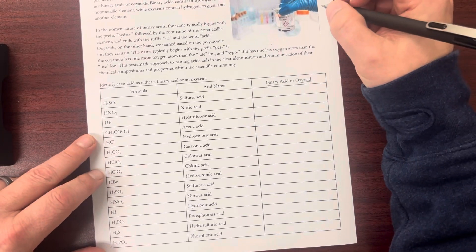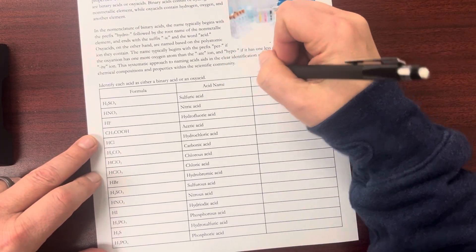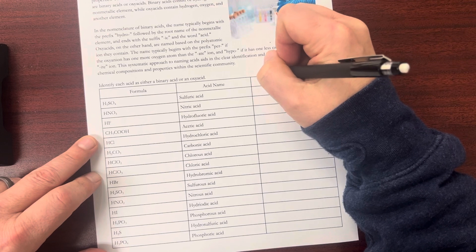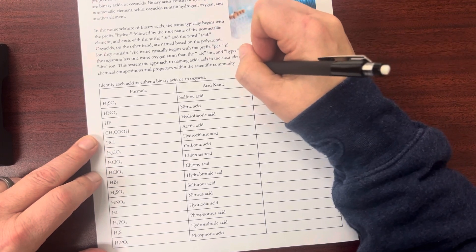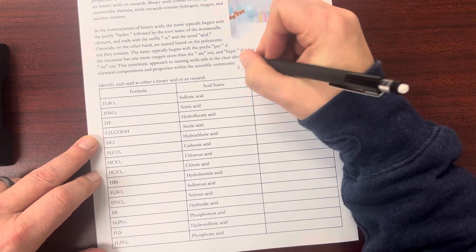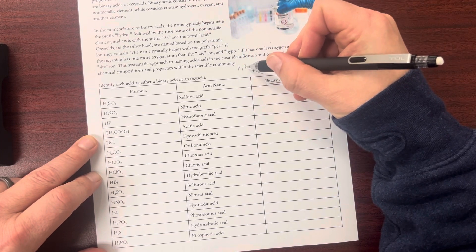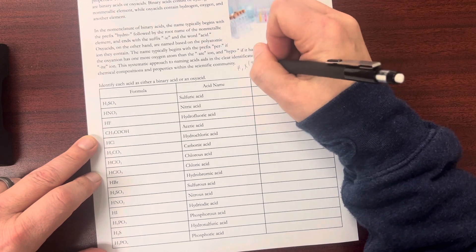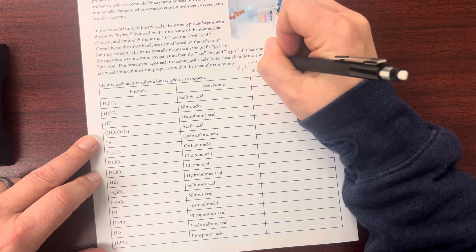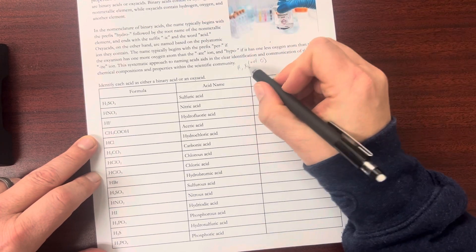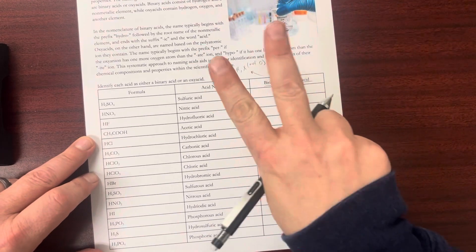Now with binary, what you're going to have is hydrogen and something else. I'm just going to put X, but something else with the hydrogen, but not oxygen. So hydrogen and one other thing. There's two elements, binary.